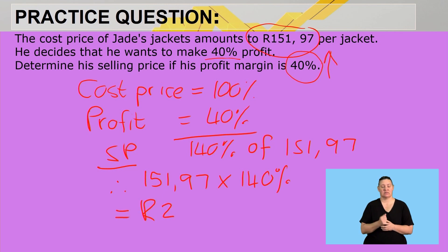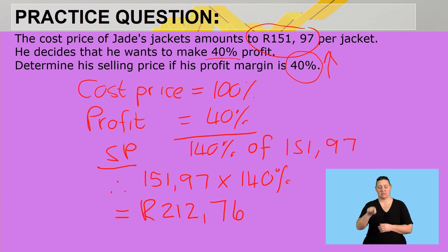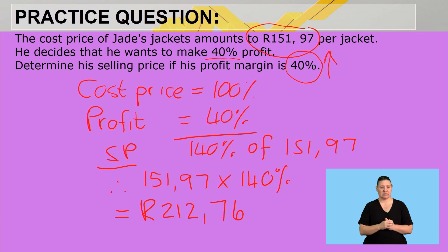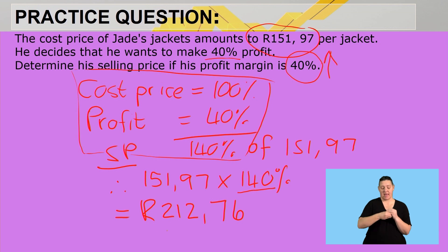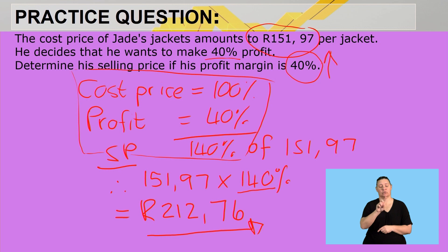Our selling price will be R212.76. Let's just recap what we did here. We looked at the percentages of the profit margin, then we added 40% and we arrived at the answer of R212.76.